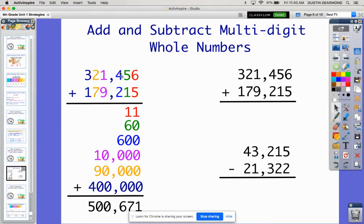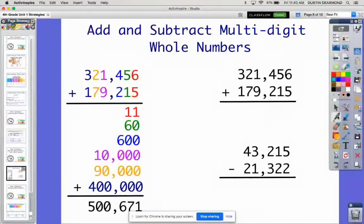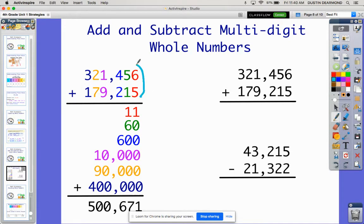Each place value is a different color. The ones, the tens, the hundreds, thousands, ten thousands, hundred thousands. And so what we did is we looked at each place value one at a time, starting with the ones place. And so we would say 6 and 5 equals 11, and so we have that right there.